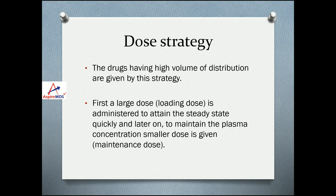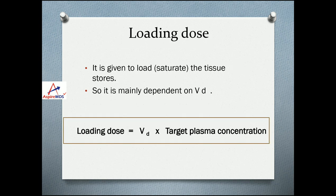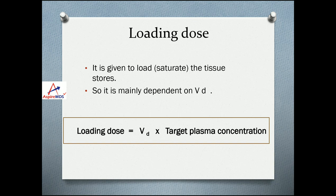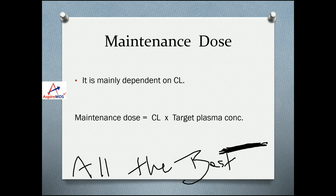Dosing strategy: for drugs with high volume of distribution, there are two doses — loading dose and maintenance dose. First, a large loading dose is administered to quickly attain a steady state. Then a maintenance dose is given based on clearance — only replacing the amount of drug being cleared from the body. Loading dose is mainly dependent on volume of distribution: Loading dose = volume of distribution × target plasma concentration. Maintenance dose is dependent on clearance: Maintenance dose = clearance × target plasma concentration. So, a common MCQ: loading dose is dependent on volume of distribution; maintenance dose is dependent on clearance.